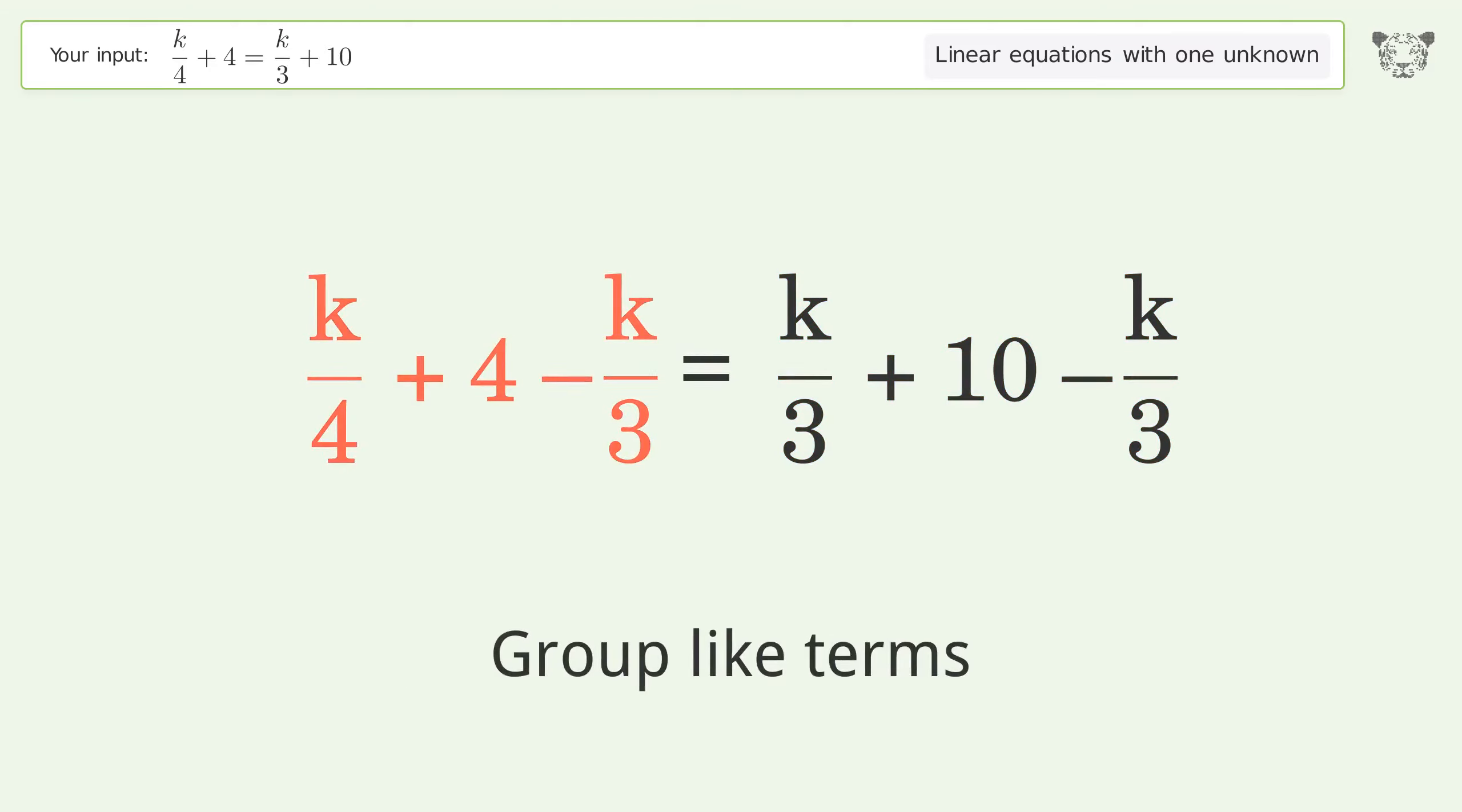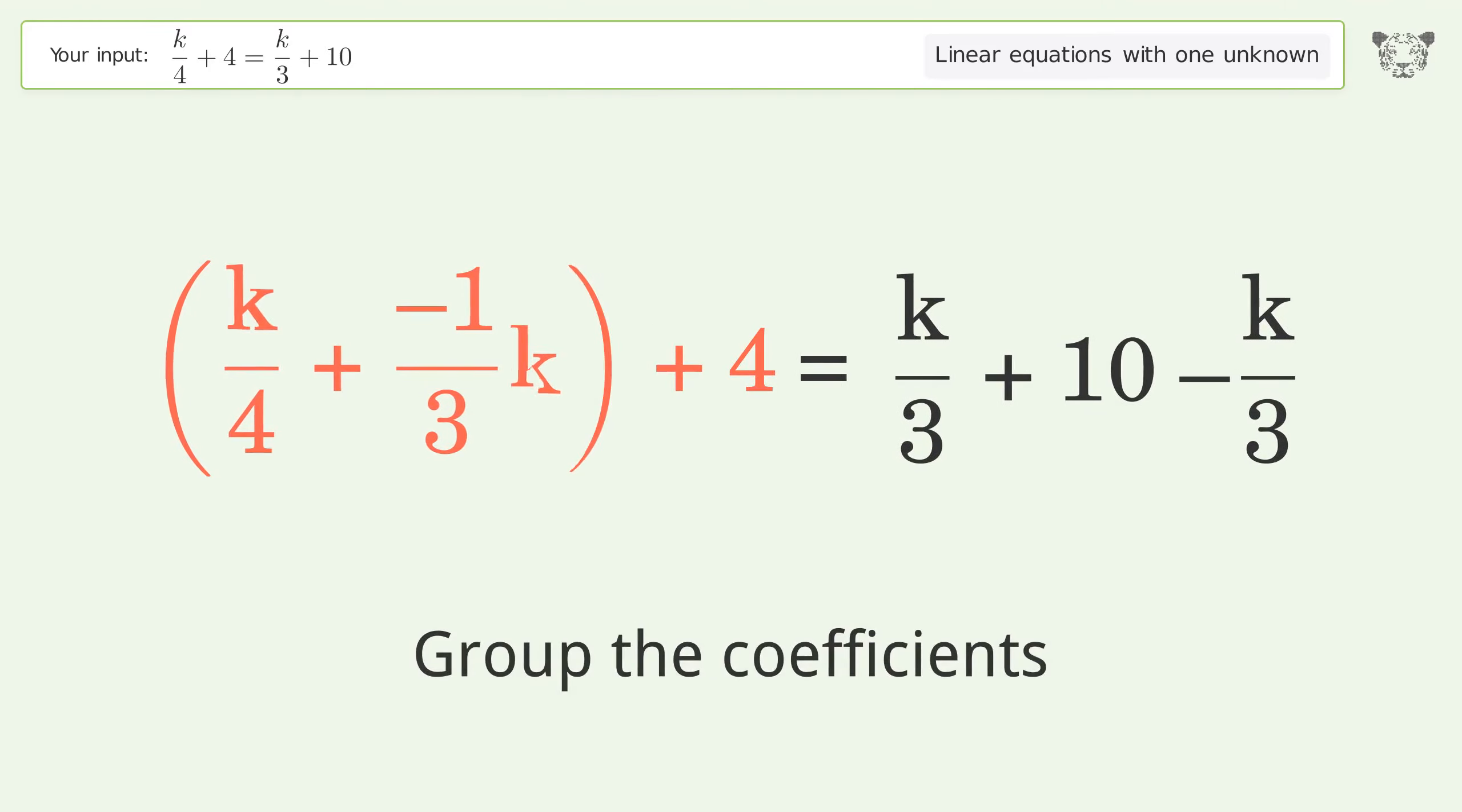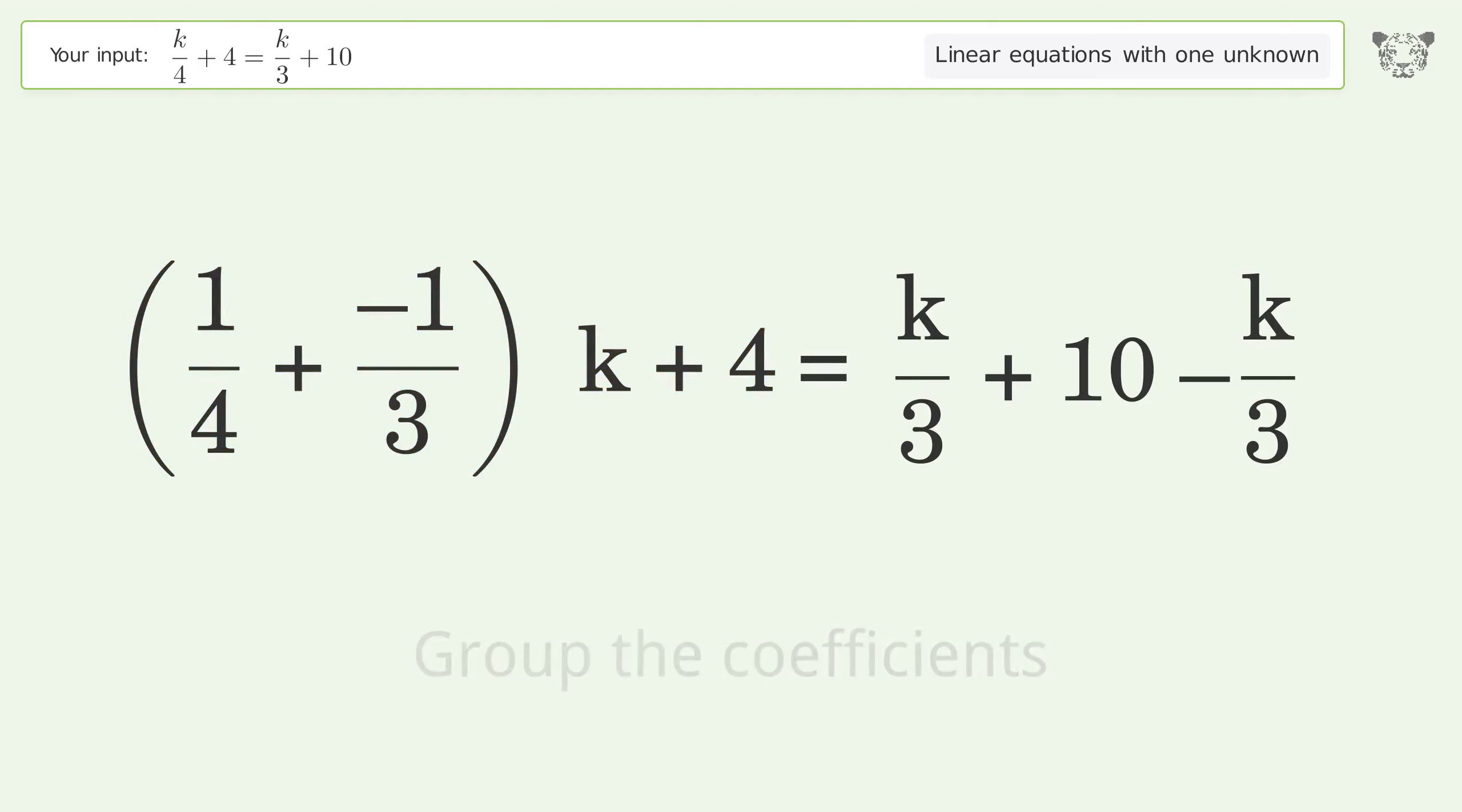Subtract k over 3 from both sides. Group like terms. Group the coefficients.